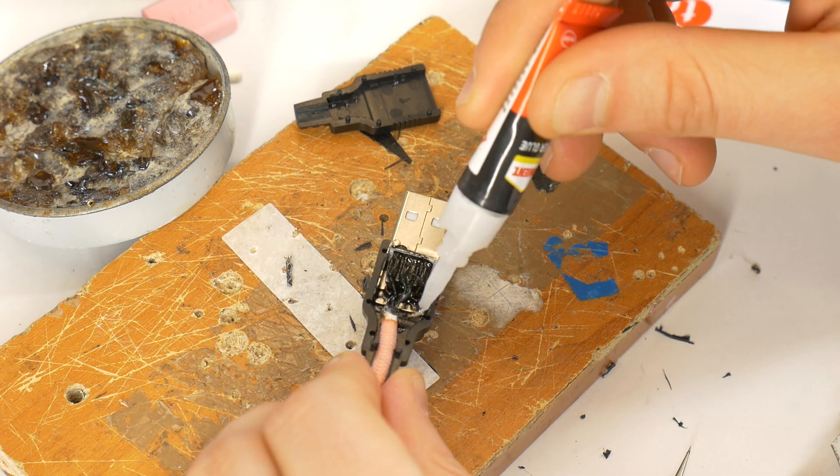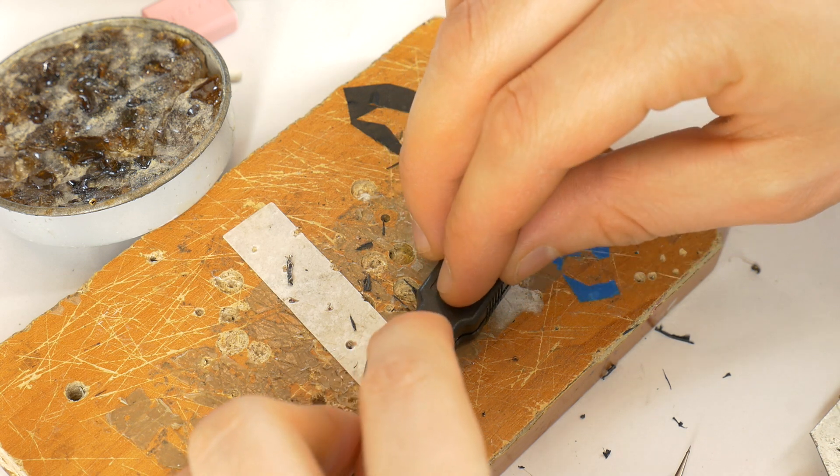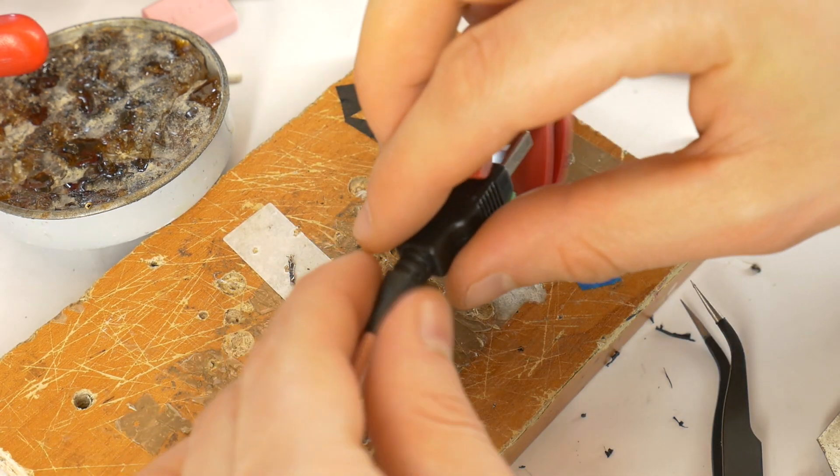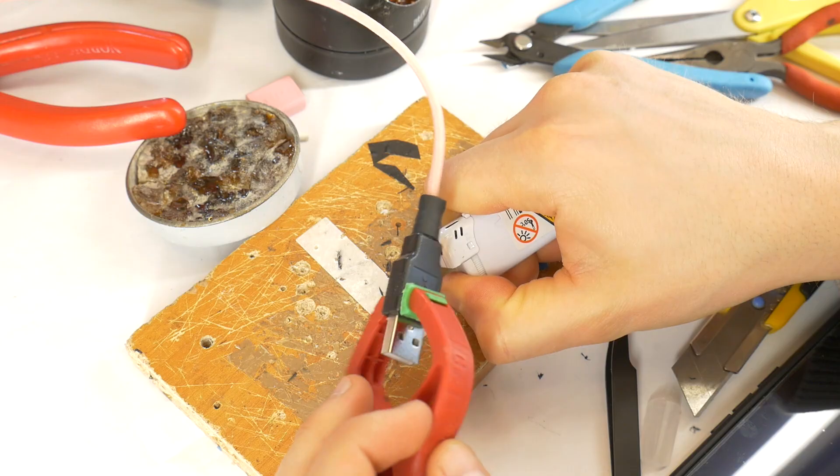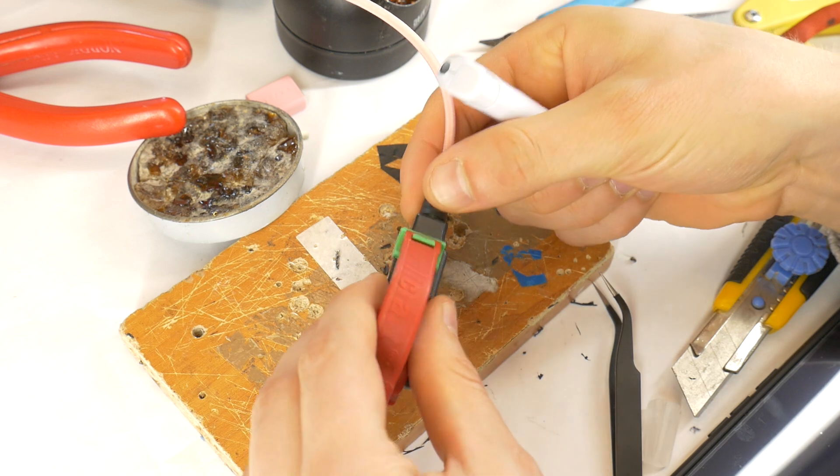Apply small dots of glue around the plastic part. Press the two parts together tightly and use clamps to hold them in place. Once the glue has dried, install the heat shrink tubing to provide extra support and durability for the cable.